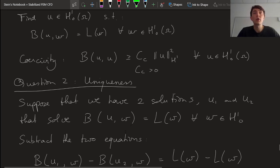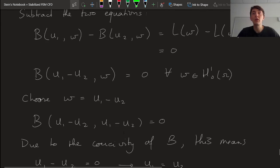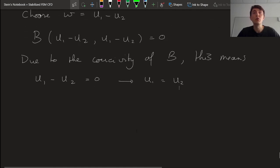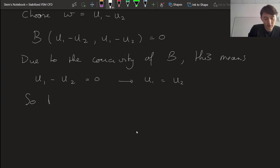with a coercive bilinear form, ends up having to mean that those two solutions are equal to one another. So in fact we only have one solution, and hence the solution is unique.